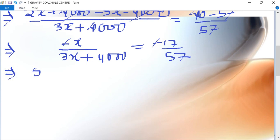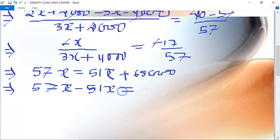So 57x equals 51x plus 68,000. After subtracting, 57x minus 51x becomes 6x equals 68,000.